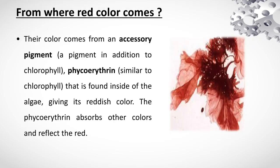Where does the red color come from? Their color comes from accessory pigments — for example, phycoerythrin, which is found inside the algae, giving it its reddish color. The phycoerythrin absorbs other colors and reflects the red.